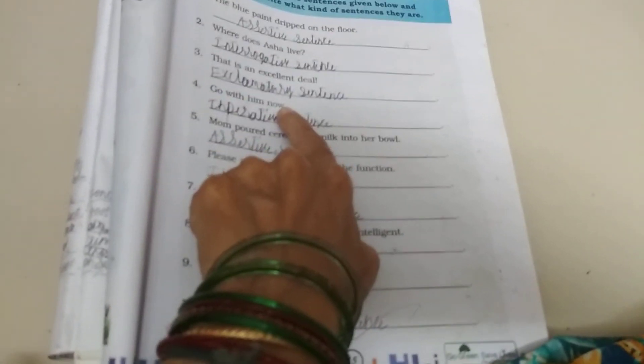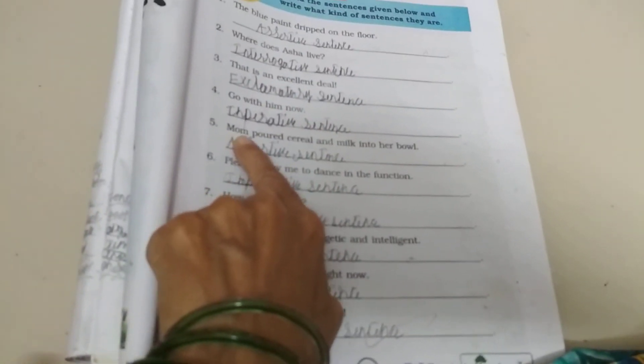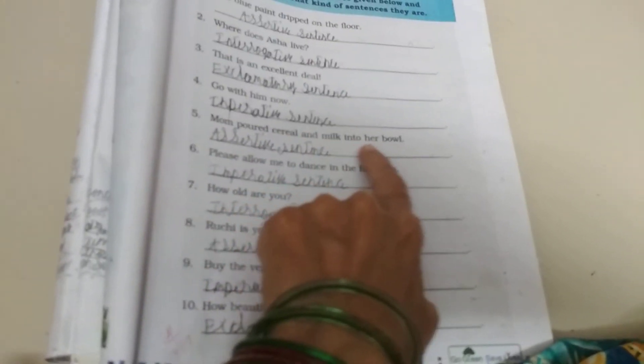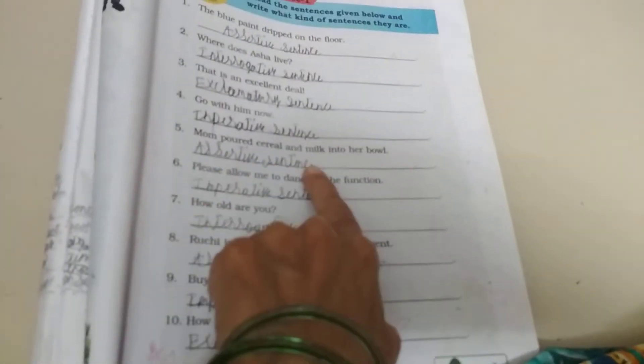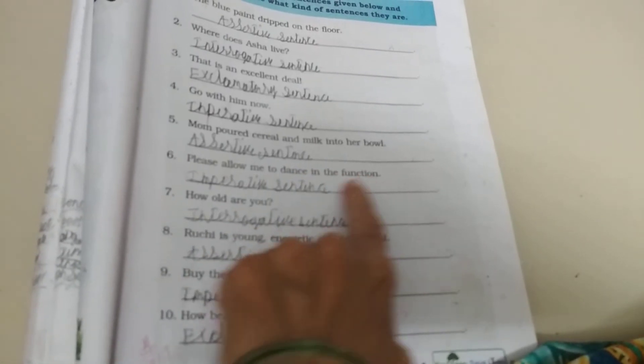That is, it is a command. Mom poured cereal and milk into her bowl. Assertive sentence. Please allow me to dance in the function. Imperative sentence. That is, it is a request.